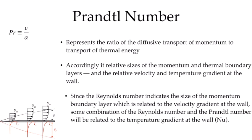You can think of this transport of momentum where we have a high value of momentum and a low value, and this gradient and transition is related to the viscosity of the fluid. Similarly, this temperature transition is governed by the conductivity or the thermal diffusivity. So the Prandtl number is going to relate the relative sizes of the momentum boundary layer, delta, to the size of the thermal boundary layer, delta_T.